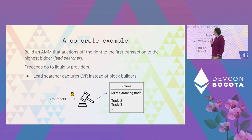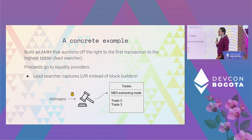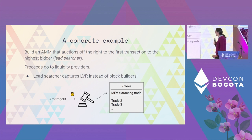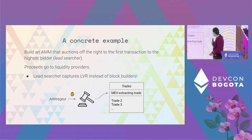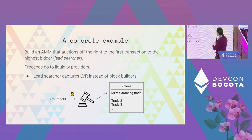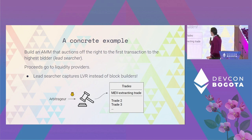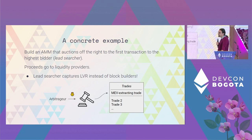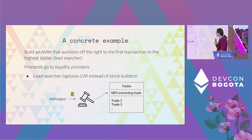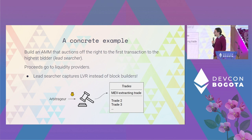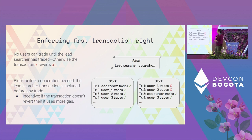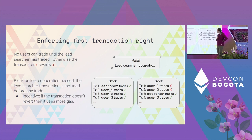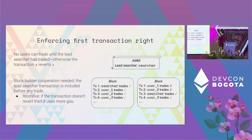We start from any AMM, let's say a constant product AMM like Uniswap. On top of it, we create a mechanism where we can auction the right of executing the first trade on the exchange. There is going to be a so-called lead searcher, which is the highest bidder that takes the right to execute the first transaction. This is a good way to capture LVR, and importantly, the proceeds go to the liquidity providers — this is the MEV that otherwise would be extracted by miners. So how can this actually work? We simply say that no user can trade until the lead searcher has actually traded first. If the lead searcher trades, then all the transactions go through.